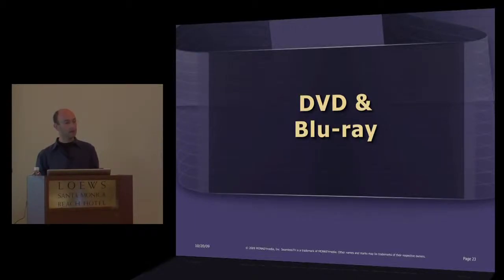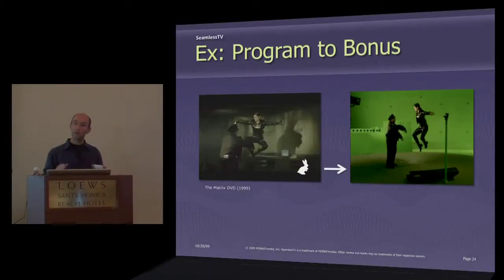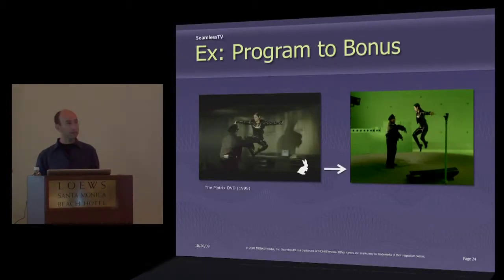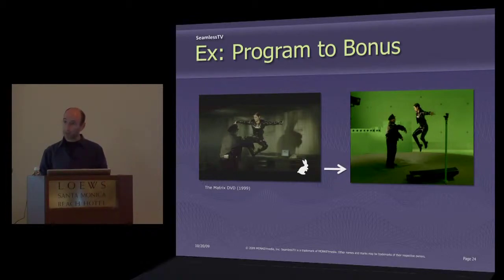Let's take a look at a couple of examples on DVD and Blu-ray. We'll start out with The Matrix. In 1999, The Matrix came out on DVD, and it was the first example that we're aware of of seamless expansion.